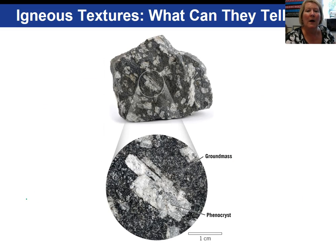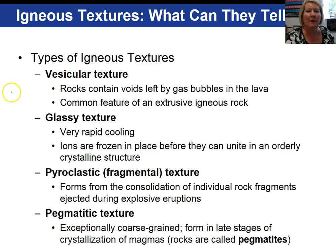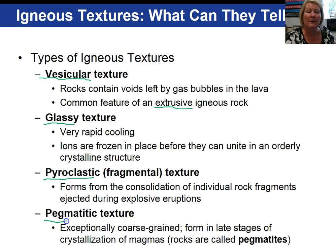Here's a very nice example of an igneous rock with a porphyritic texture. Vesicular texture has vesicles or holes in the rock due to gases trying to escape — very common for extrusive igneous rocks. Keep in mind, the gas content in magma is between one to six percent. Glassy indicates very rapid cooling. Pyroclastic refers to consolidation of individual rock fragments violently ejected during an eruption. Pegmatites are exceptionally coarse-grained — greater than a centimeter in size for the minerals — indicating late stages of crystallization of magma involving a lot of fluids.